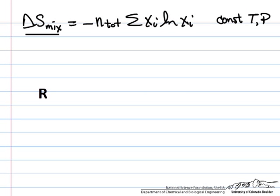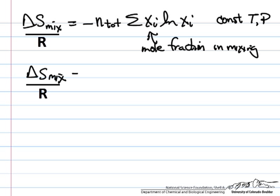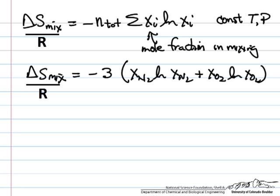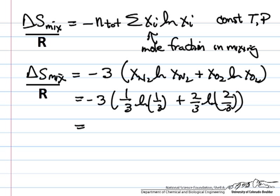The other way to do the calculation is to use the equation expressed in terms of the mole fraction, so this is the mole fraction in the final mixture. And so delta S of mixing for this case would be minus 3, total number of moles. And then X1, or X nitrogen, log of X nitrogen plus X oxygen, log of X oxygen, which is minus 3 times 1 third, the log of 1 third, plus 2 thirds, log of 2 thirds, which becomes minus the log of 1 third, minus 2 times the log of 2 thirds.